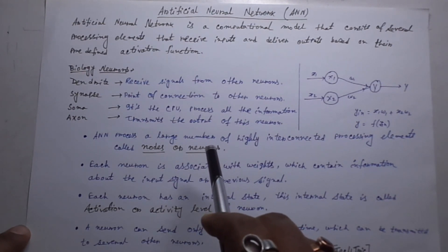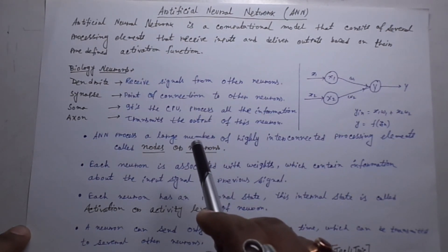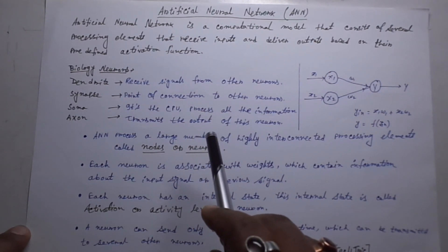Before learning Artificial Neural Network, you have to learn Biological Neuron first. So what is Biological Neuron? The Biological Neuron consists of four main parts.